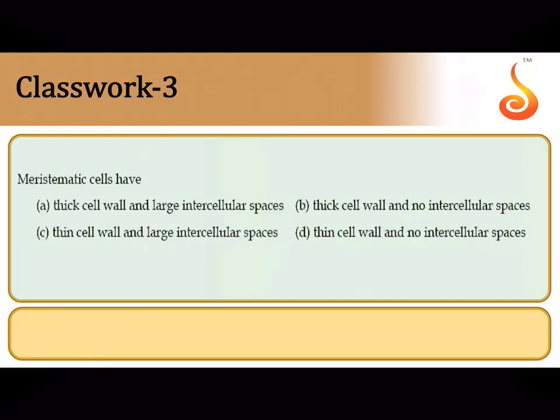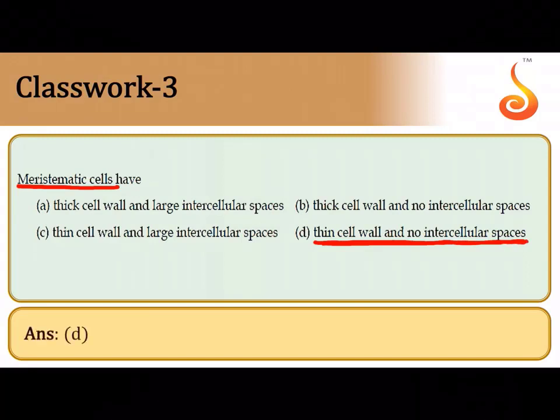Meristematic cells — one of the most important features to remember is that they are actively dividing cells. Since they are actively dividing, they should have a thin cell wall, without any intercellular spaces; the cells are compactly packed and constantly in division. So the correct answer is: they have a thin cell wall and no intercellular spaces.